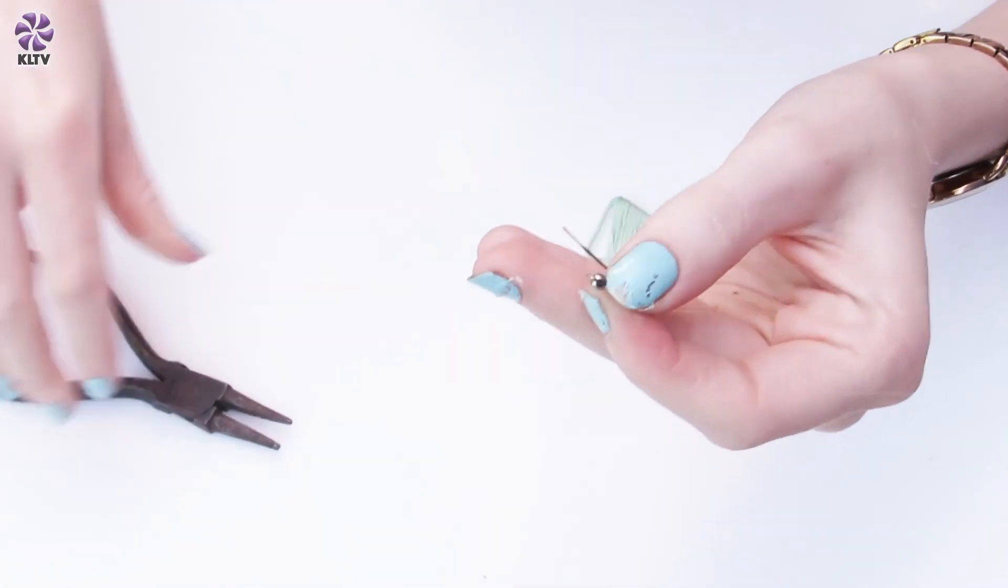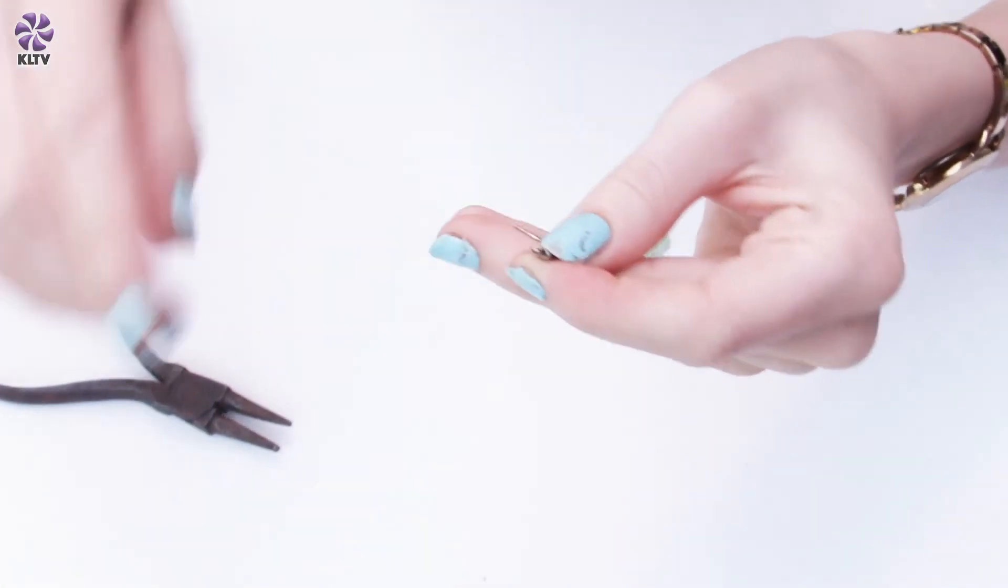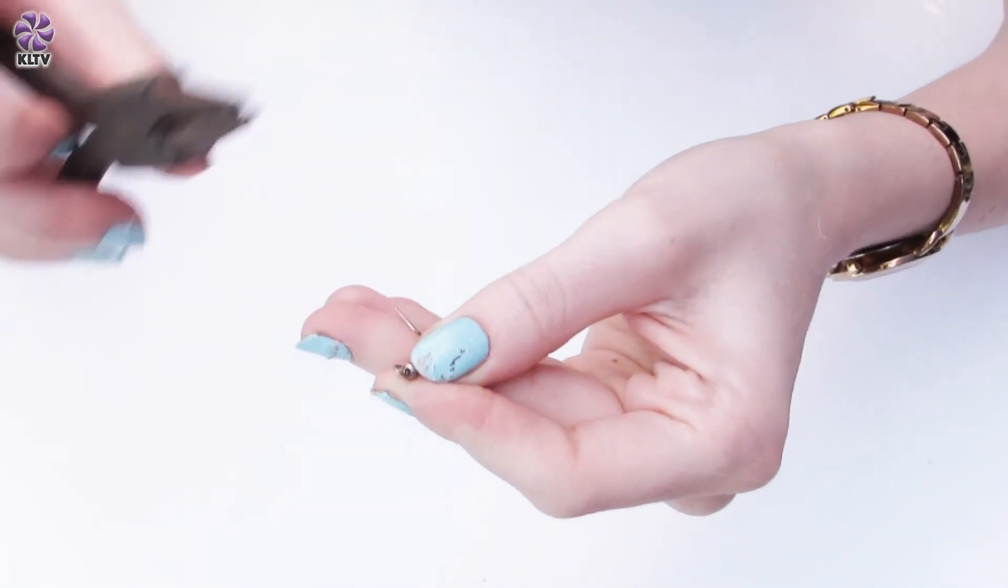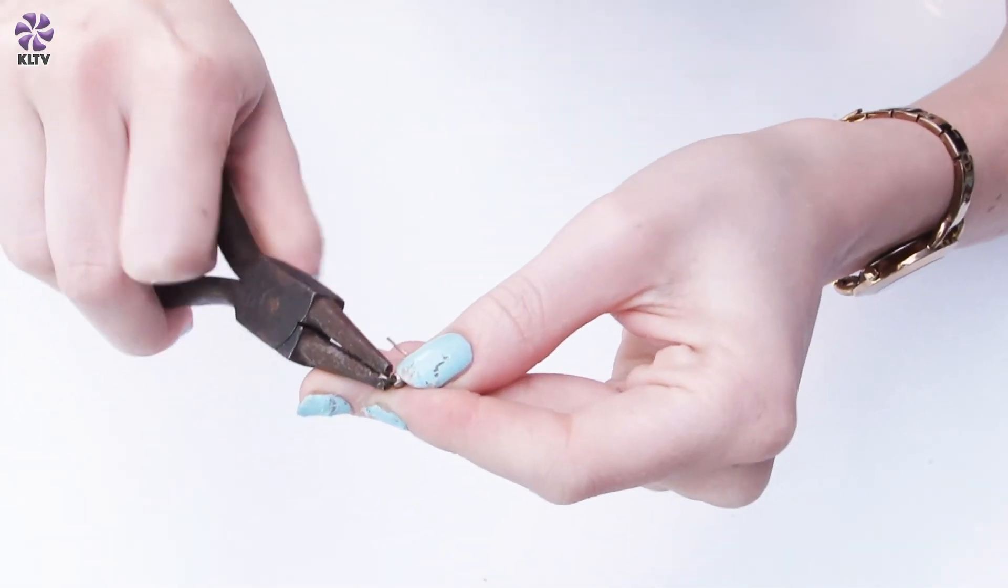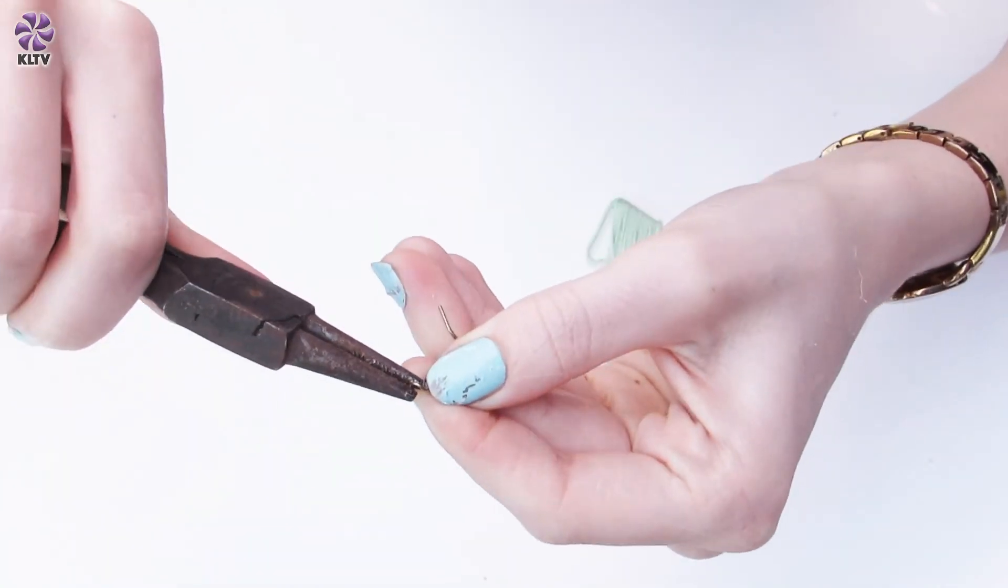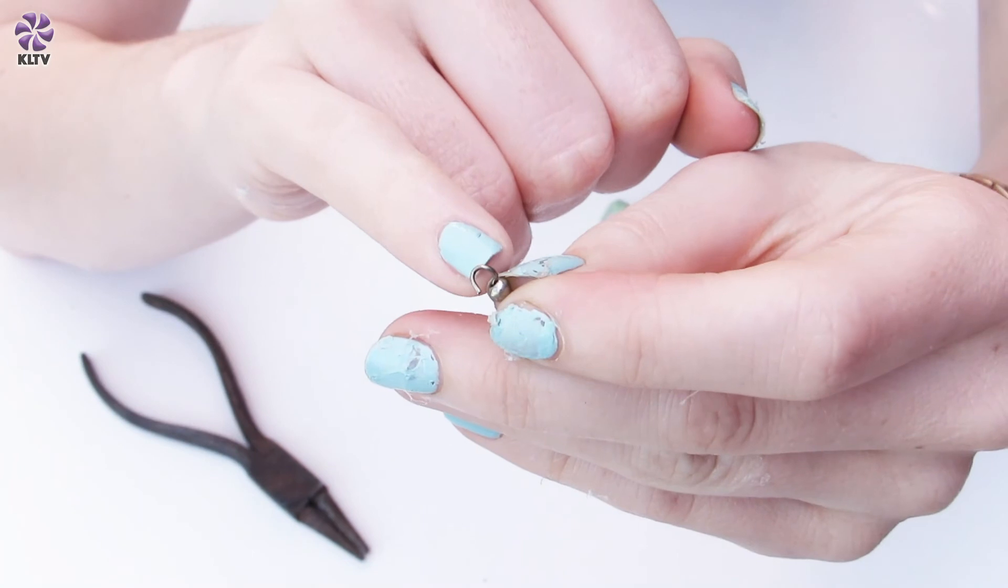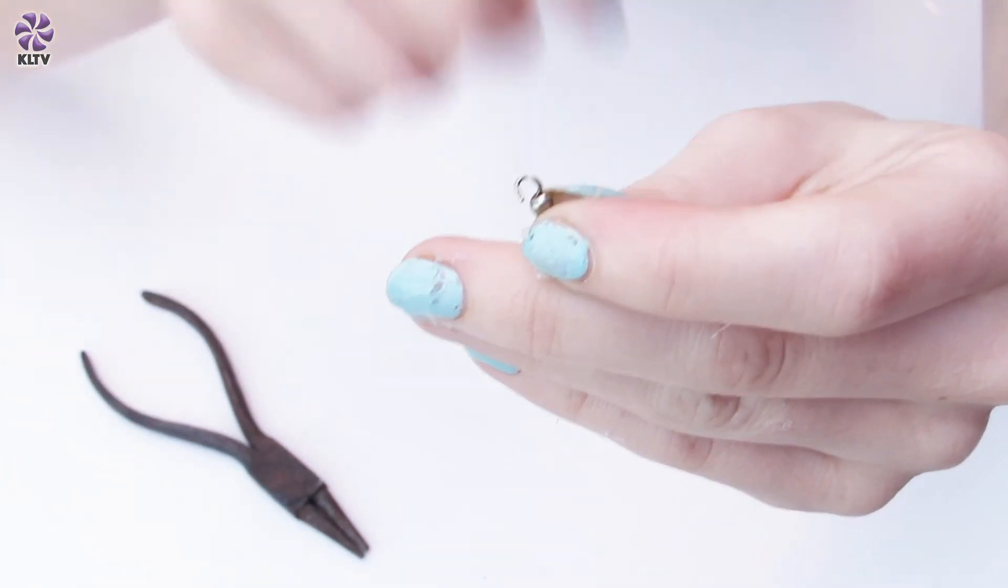So to attach our earring hook on, we just want to clamp hold of this little ring at the bottom and we just want to twist that metal open. As you can see there, this metal has twisted open so that we can apply the triangle shape on.